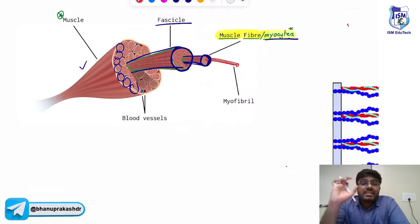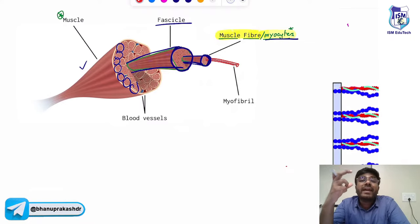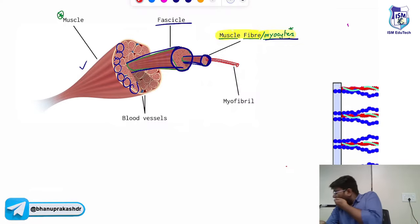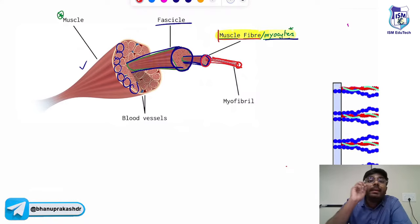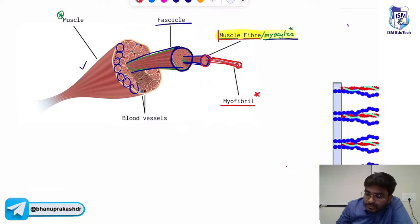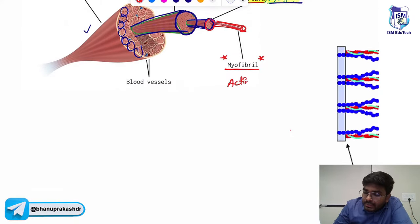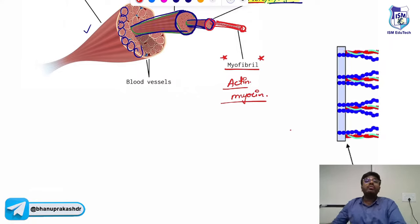Inside a muscle, we have fascicles — muscle fascicles. Inside a fascicle, there are muscle fibers, which are nothing but the myocytes, the muscle cells. Inside the muscle fibers, inside the myocytes, you have myofibrils. The myofibrils are nothing but actin and myosin, which help in muscle contraction.